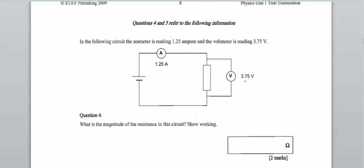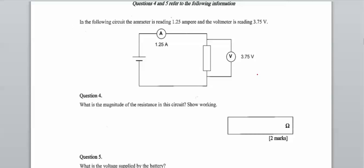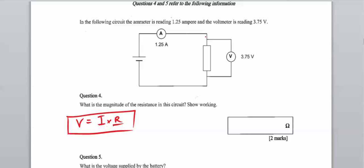Question four. In the following circuit, the ammeter is reading 1.25 amps and the voltmeter is 3.75 volts. What is the magnitude of the resistance? We use Ohm's law: V equals I times R. So resistance equals V divided by I, which is 3.75 divided by 1.25, giving a resistance of 3 ohms.